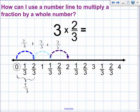We could also add them. Two plus two plus two gives us six with a denominator of three. Six divided by three gives us two.